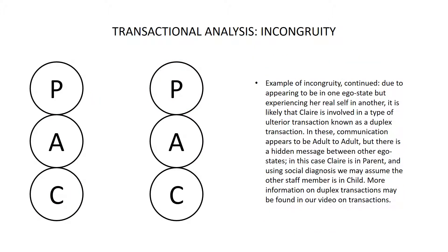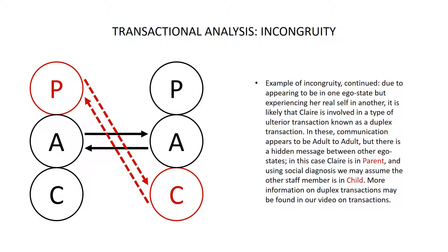Due to her appearing to be in one ego state but experiencing her real self in another, it is likely that Claire is involved in a type of ulterior transaction known as a duplex transaction. In duplex transactions, the communication appears to be adult to adult, but there is a hidden message between other ego states. In this case, Claire is in parent and, using social diagnosis, we may assume the other staff member is in child. More information on duplex transactions may be found in our video on transactions.